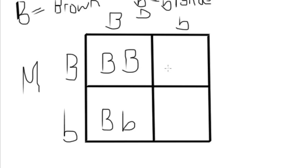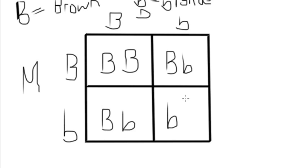Going over here, we're going to have a big B from mom and a little B from dad. And then in this last little box, little B, little B.